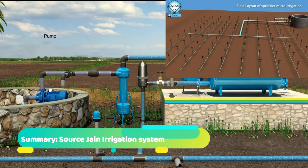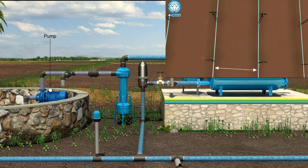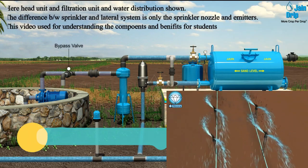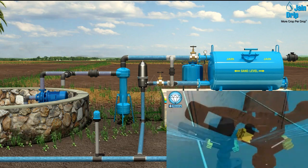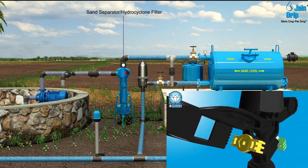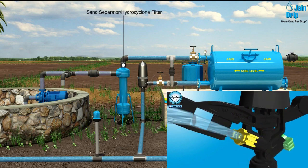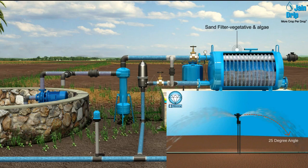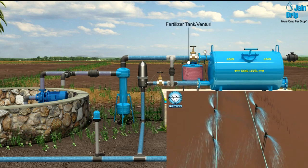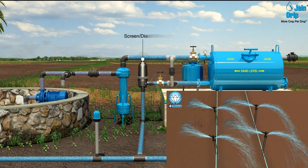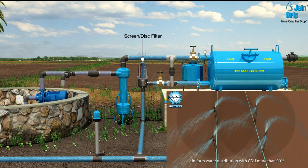The pumping unit is used to lift the water from the source and convey it to the field through various essential components. The bypass mechanism is used to adjust the flow and pressure of the system. Water is filtered through a hydrocyclone filter or sand separator to remove sand particles. The sand filter traps vegetative matter and algae. The fertilizer tank is used to inject fertilizer into the irrigation line.